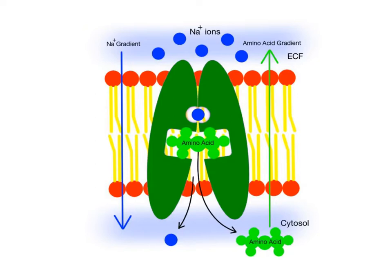Here's an example of another symporter that is pumping sodium ions and amino acids in the same direction into the cell. Sodium ions, like always, are moving passively into the cell from an area of high to low concentration. The amino acids are moving simultaneously in the same direction, but against their concentration gradients — from low concentration in the ECF to high concentration in the cytosol.